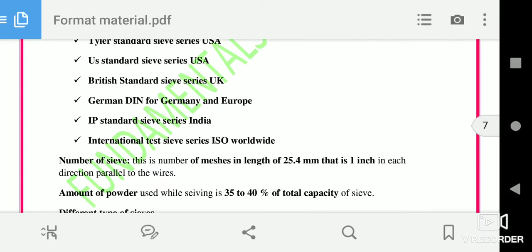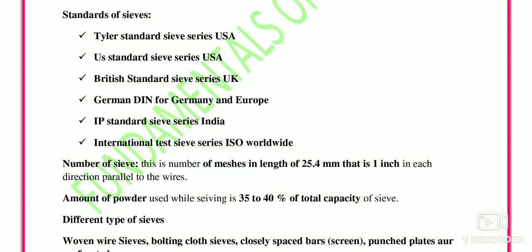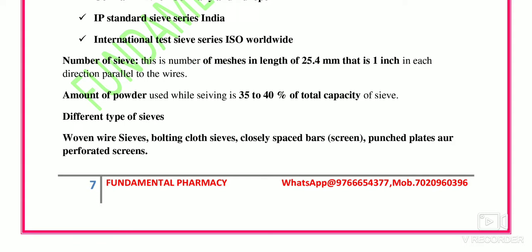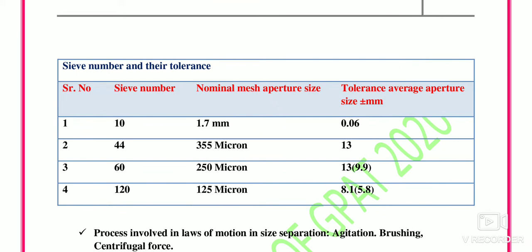For sieving, 35 to 40% of the total capacity of the sieve is taken as the amount of powder. Different types of sieves include: wire sieves, bolting cloth sieves, closely spaced bars (also known as screens), and punched plates or perforated/perforation screens.